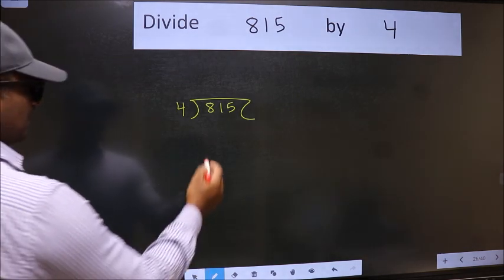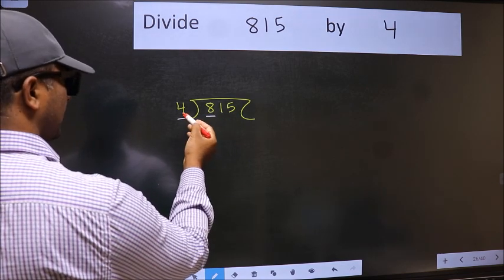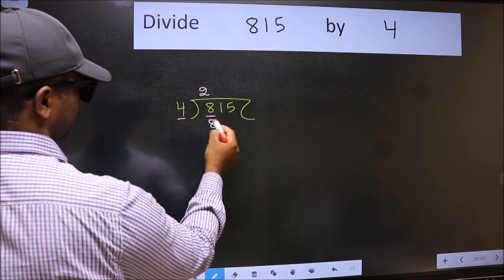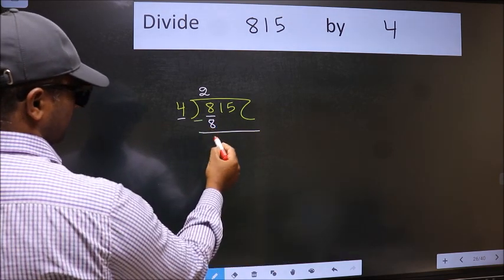Next, here we have 8 and here 4. When do we get 8 in the 4 table? 4 times 2 is 8. Now we should subtract. We get 0.